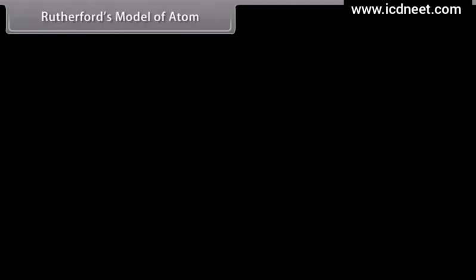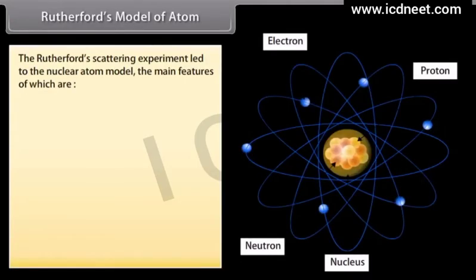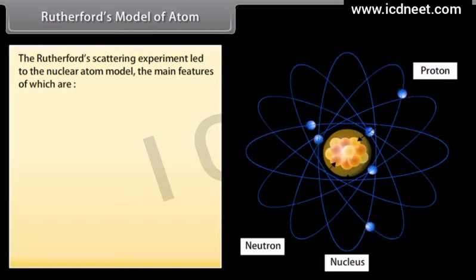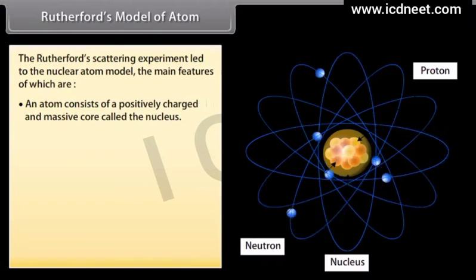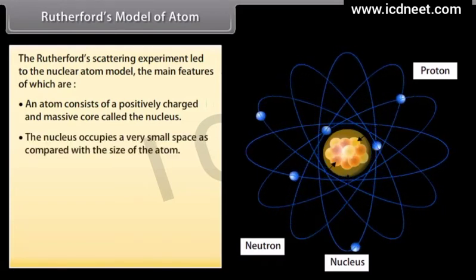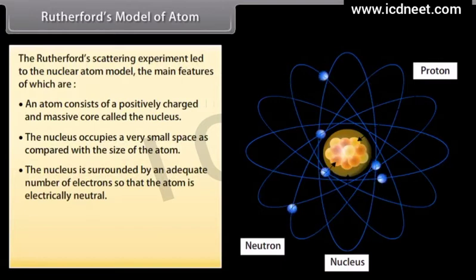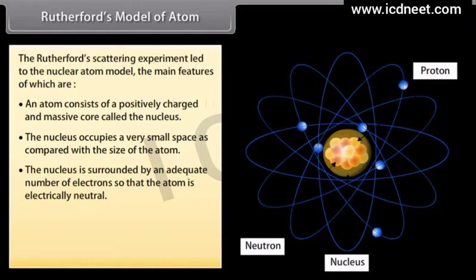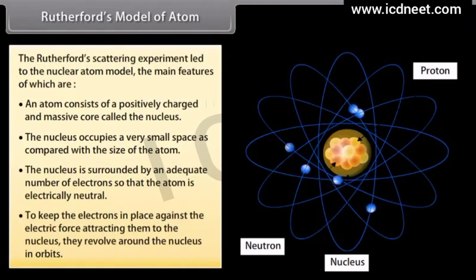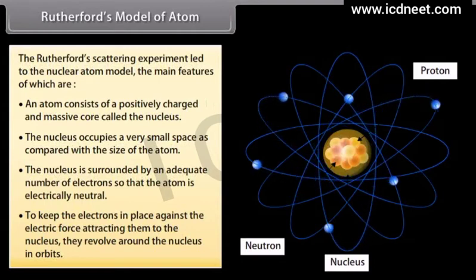The Rutherford scattering experiment led to the nuclear atom model. An atom consists of a positively charged and massive core called the nucleus, which occupies a very small space compared with the size of the atom. The nucleus is surrounded by an adequate number of electrons so that the atom is electrically neutral. To keep the electrons in place against the electric force attracting them to the nucleus, they revolve around the nucleus in orbits.